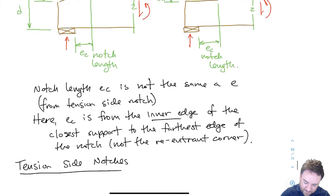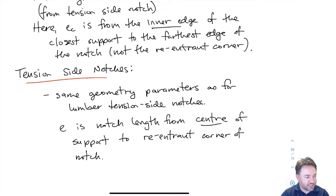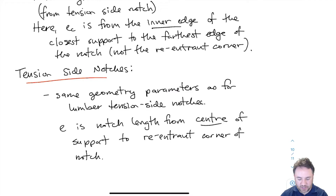For tension side notches in glulam, the geometry is basically exactly the same as for lumber tension side notches. Refer back to the shear strength video for lumber for a picture. E is defined as the length from the center of the support to the re-entrant corner of the notch.